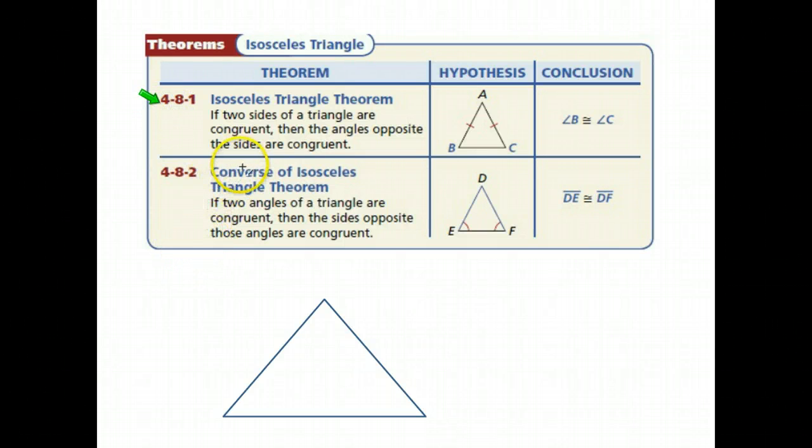Here we have the isosceles triangle theorem. What we know about isosceles triangles is that they have at least two congruent sides. If you have two congruent sides, then you automatically know you also have two congruent angles, specifically the angles opposite or across the figure from those sides. Across from this side would be angle B, across from this one would be angle C.